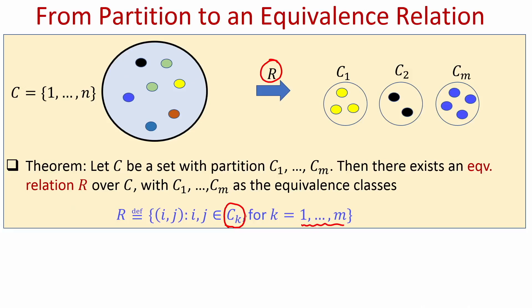The required equivalence relation is as follows. You take any subset C_K from the given partition, where K ranges from 1 to M. For each subset C_K, I take elements i and j present in C_K and add the ordered pair (i, j) to my relation R. There is no restriction that i must be different from j — I am looping over all possible i, j present in C_K. For every i, j in C_K I add the ordered pair (i, j) to R. If I do this for every subset C_K in the partition, the resultant relation R will be an equivalence relation and its equivalence classes will be the subsets C_1 to C_M.